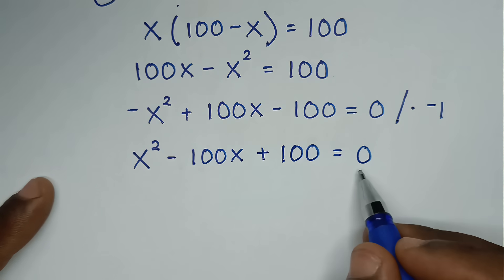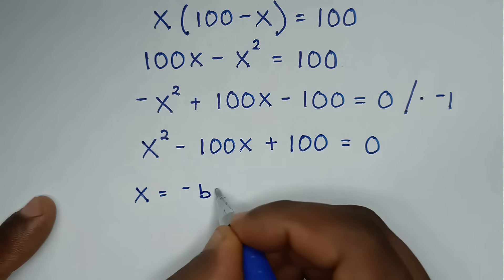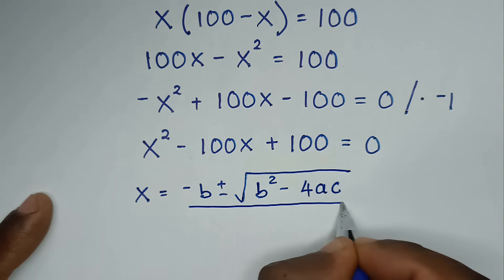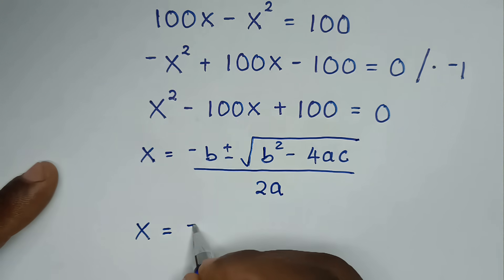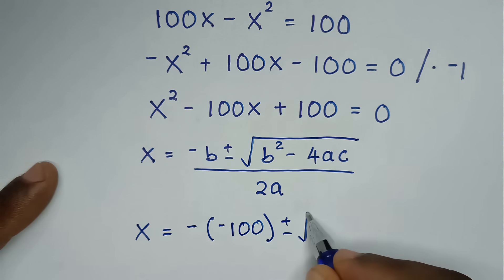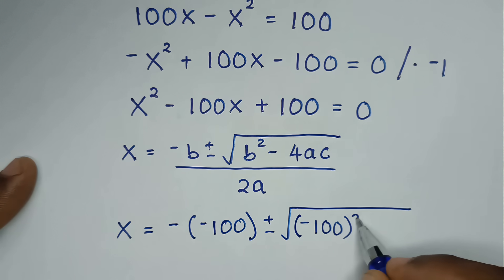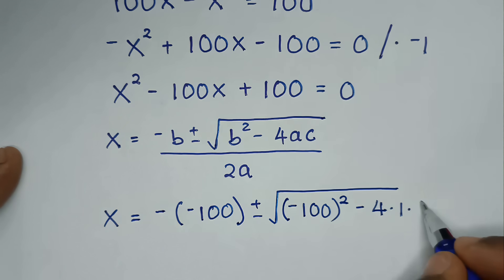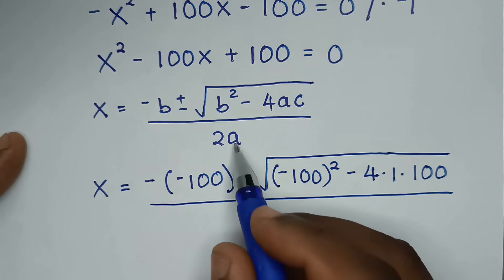Now into this quadratic equation, to find the values of x, we'll use the quadratic formula: x is equal to negative b plus or minus square root of b squared minus 4ac, over 2a. So here x equals negative b, where b is the coefficient of x, which is negative 100, plus or minus square root of b squared minus 4 times a, which is 1, times c, which is 100, over 2 times a, which is 1.